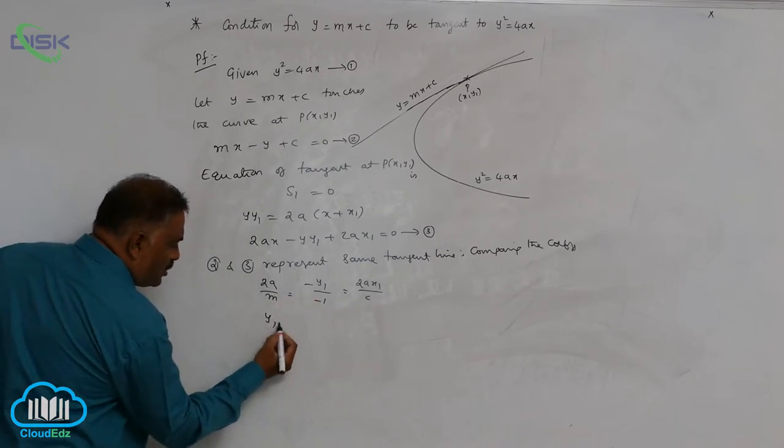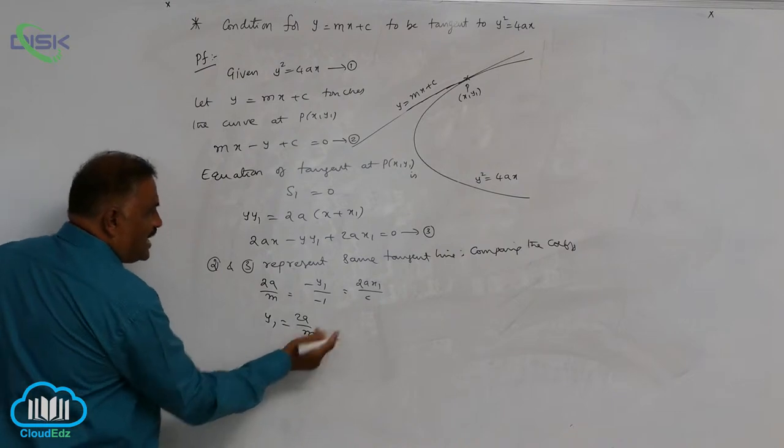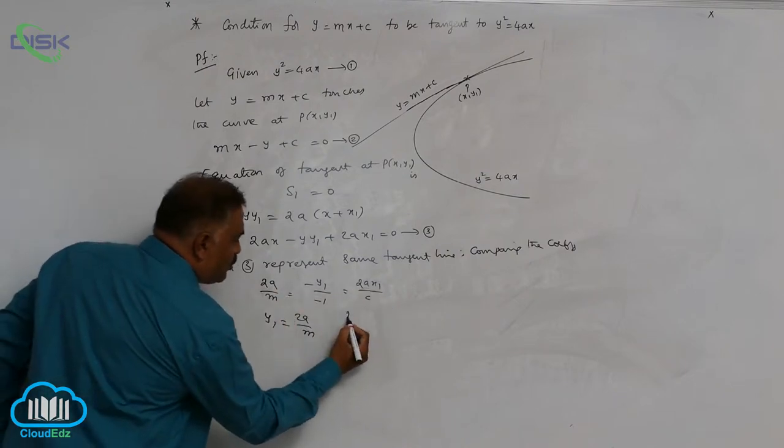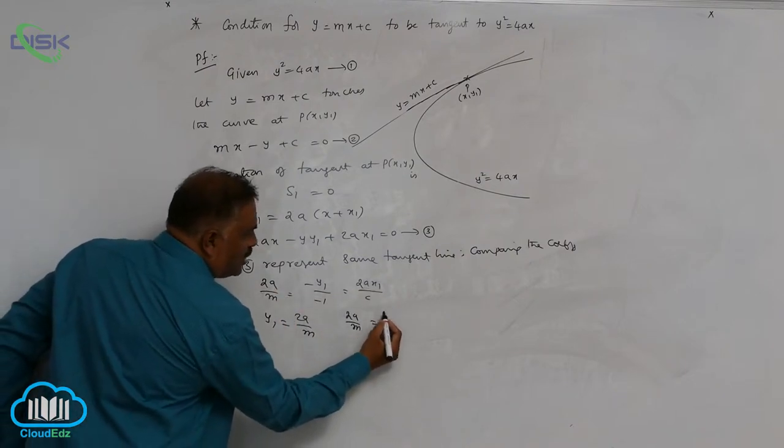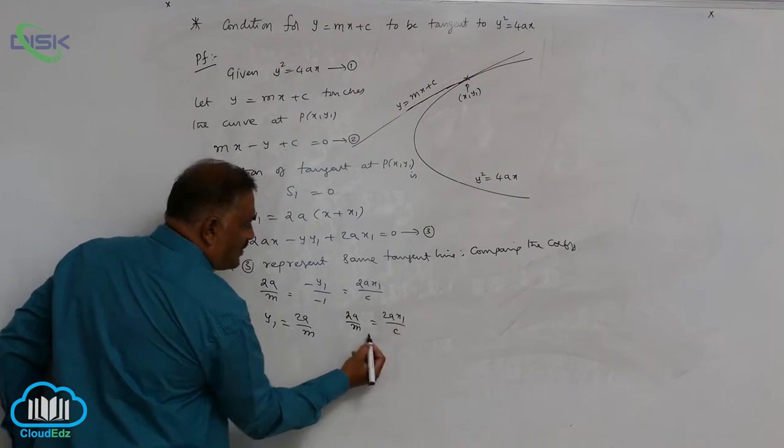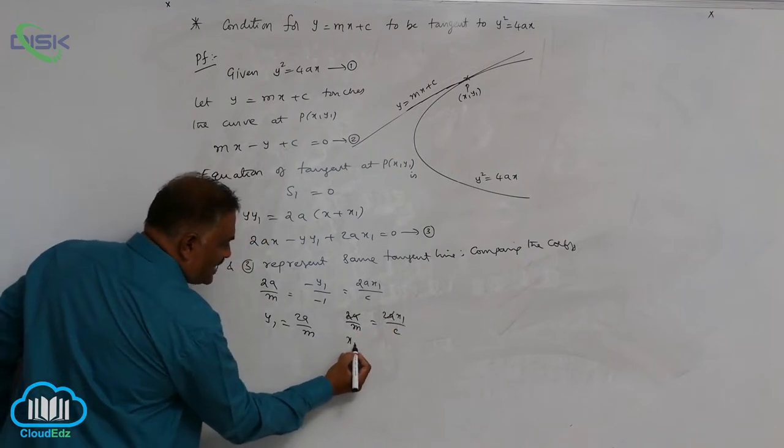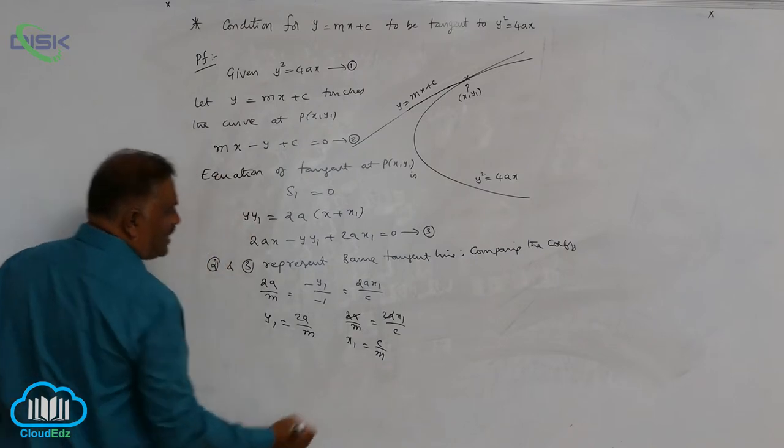From the ratios, y₁ = 2a/m. Taking first and last: 2a/m = 2ax₁/c. Cancelling 2a gives x₁ = c/m.